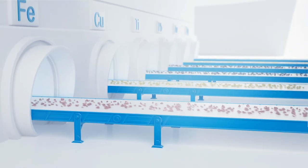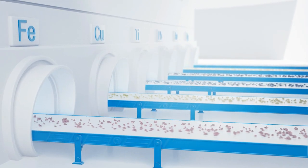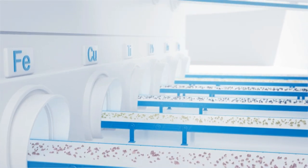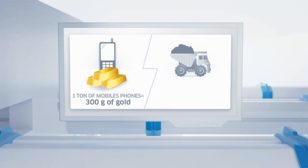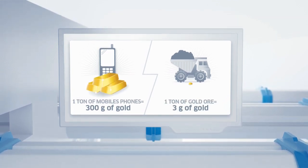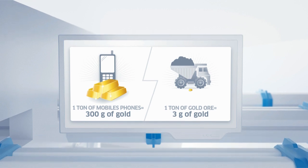All the recovered materials are now ready to be reused as new raw materials. For example, it is more profitable to recover gold from electro-waste than to dig for it in mines. And did you know that one tonne of mobile phones will yield 300 grams of gold while one tonne of extracted gold ore will only yield 3 grams of gold?